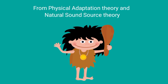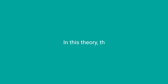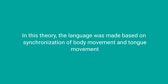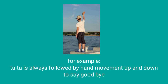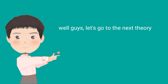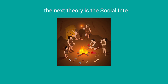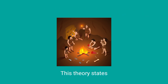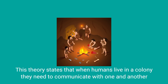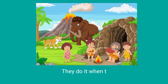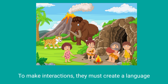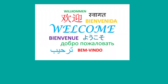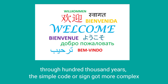From the physical adaptation theory and natural sound source theory, we have the Ta-ta theory. In this theory, language was made based on synchronization of body movement and tongue movement. For example, 'ta-ta' is always followed by a hand movement up and down to say goodbye. The next theory is the social interaction source theory. This theory states that when humans live in a colony, they need to communicate with one another — they do this when they want to go hunting or to interact socially. Through these interactions, they had to create a language. The language started from a simple code or sign, and through 100,000 years the simple code or sign became more complex.